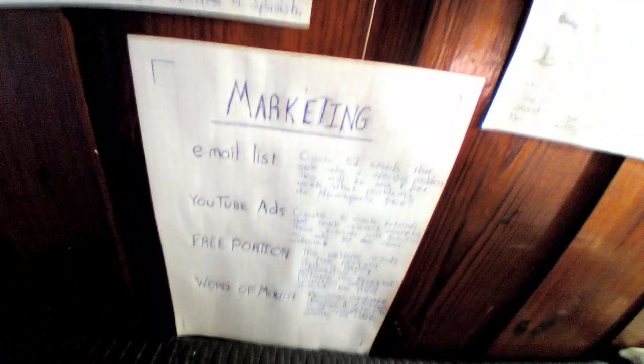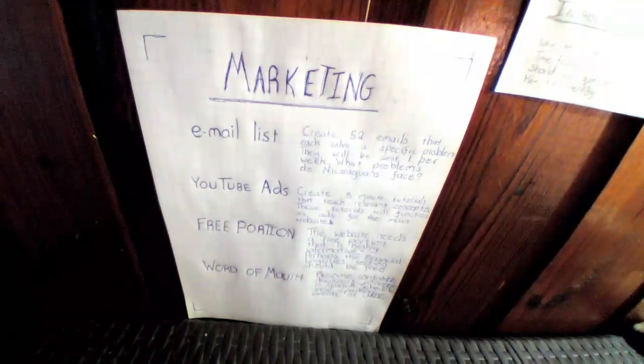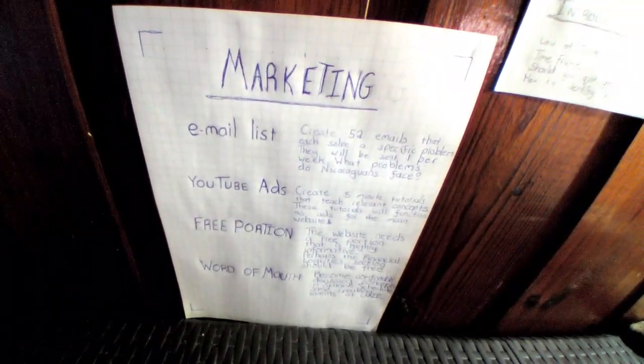Here's the marketing strategy — there are four components. There's an email list. I'll have a year's worth of emails, so that's 52 emails, and each of those 52 emails has to solve a specific problem. That is the recurring theme of this entire project. I know the group of people I'm trying to communicate with, I know what their typical problems are, I know what a lot of the emotions they experience are. All I need to do is create answers to the problems these people face.